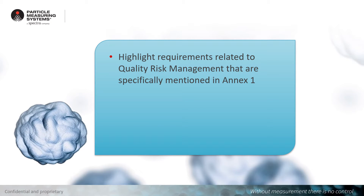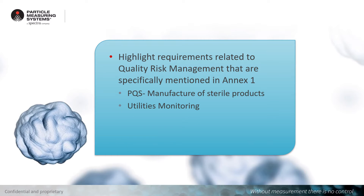I'm going to highlight requirements related to quality risk management that are specifically mentioned in Annex 1. We're going to talk about the pharmaceutical quality system requirements for manufacture of sterile products, utilities monitoring, and viable, non-viable environmental and process monitoring requirements.